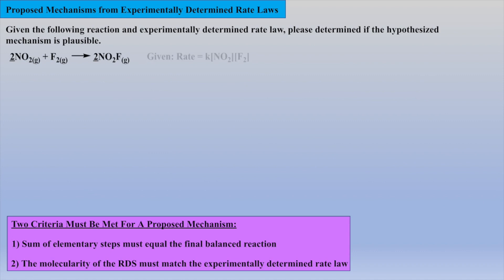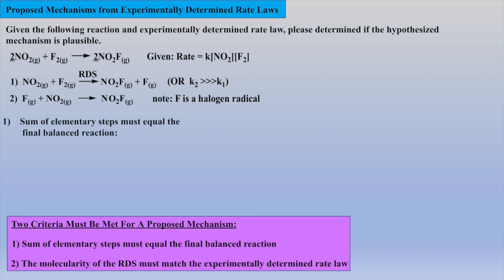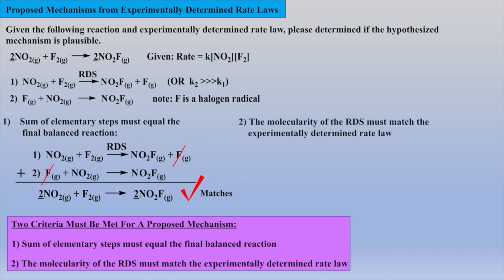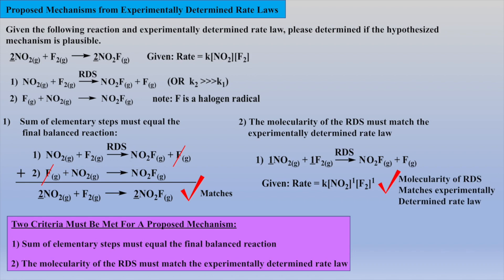In the next example reaction, we are given a previously experimentally determined rate law. A mechanism has been hypothesized, and we are asked if this mechanism is plausible. Canceling the intermediate, the fluoride radical, before adding the proposed elementary reactions affords the final reaction, which does match the stoichiometry of the given reaction. The rate constant for step 1 is much less than the rate constant for step 2; thus, step 1 is the RDS. The molecularity of step 1 matches the experimentally determined order, which is first order with respect to NO2 and first order with respect to F2. Thus, this hypothesized mechanism may be correct.